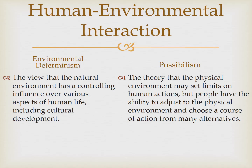Use whatever synonym you want — the environment controls, the environment exclusively shapes, the environment does it alone. On the flip side, possibilism is the theory that the physical environment may set limits on human actions, but people have the ability to adjust to the physical environment and choose a course of action from many alternatives. For example, if people don't have enough water for their crops, they can divert rivers or build dams to provide irrigation.